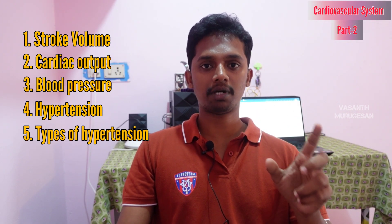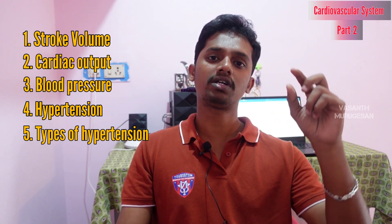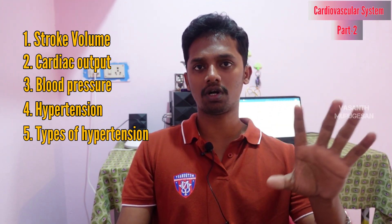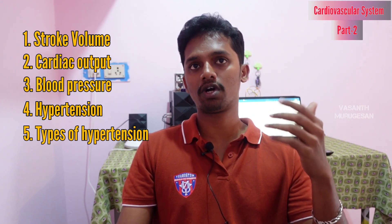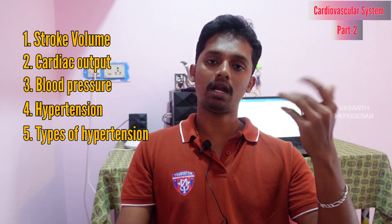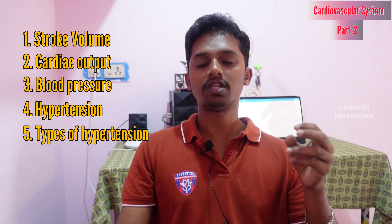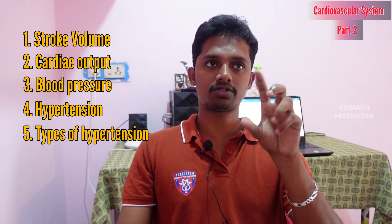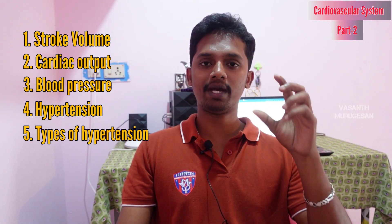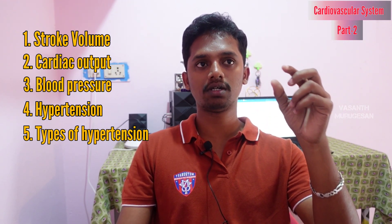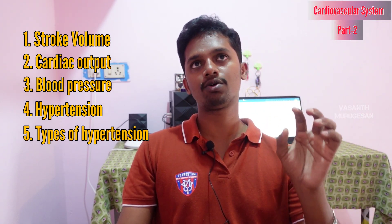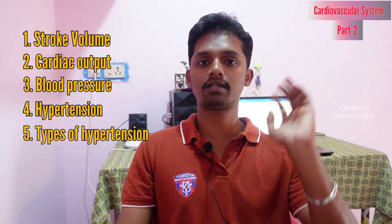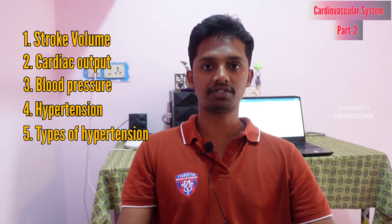The normal systolic blood pressure is 120. If it reaches 140, that is hypertension. Values of 130 to 135 are manageable. For diastolic pressure, the normal is 80. Values of 90 to 95 are acceptable, but if it reaches 100, that is hypertension. So if systolic is 140 or diastolic is 100, that is considered hypertension or high blood pressure.